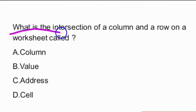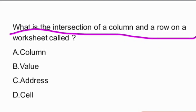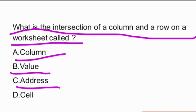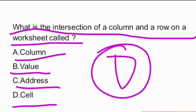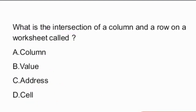Next question: what is the intersection of a column and a row on a worksheet called? The options given are: column, value, address, cell. And the answer is option D — the intersection of a column and a row on a worksheet is called a cell.